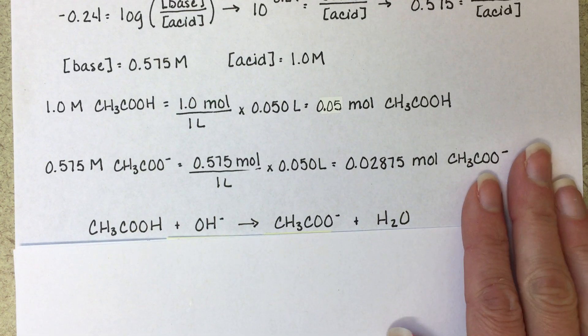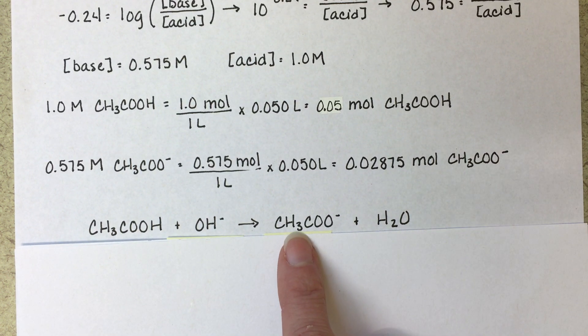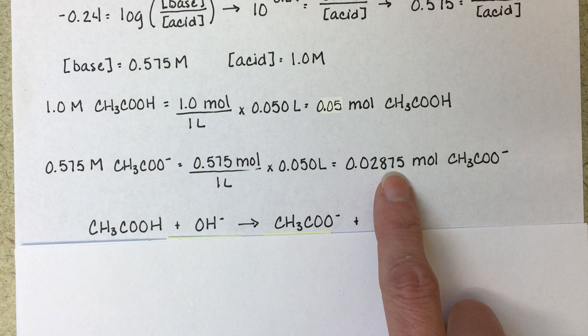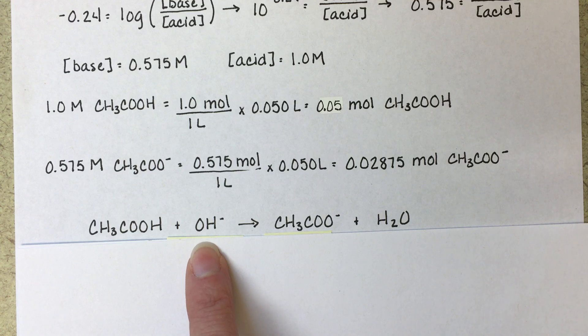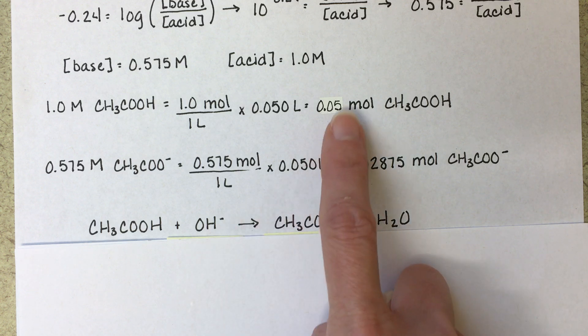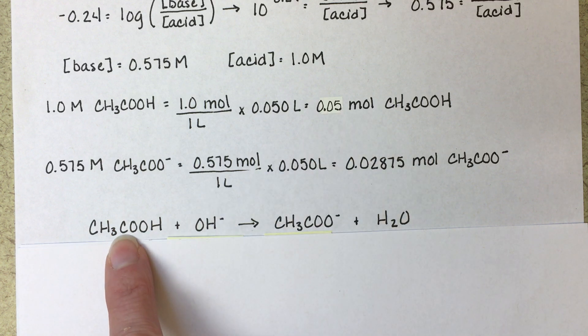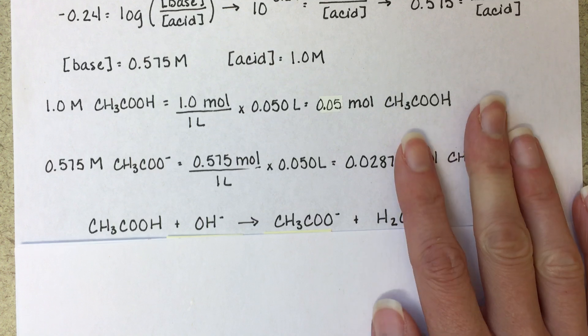So now what we have to do is figure out how are we going to make 0.02875 moles of acetate from acetic acid and sodium hydroxide. And we also need to make sure in this reaction that we are leaving or left with 0.05 moles of acetic acid, because we need that for our buffer as well.